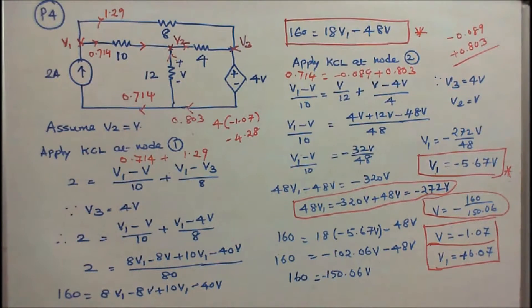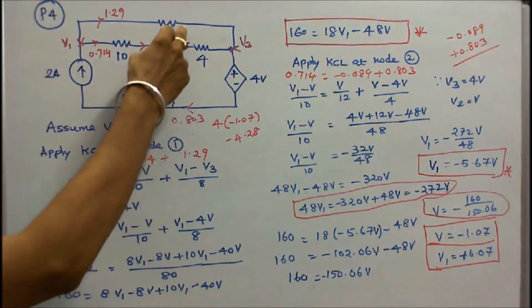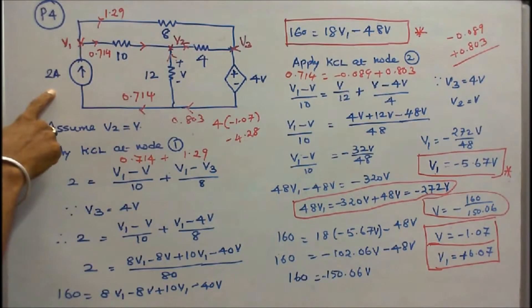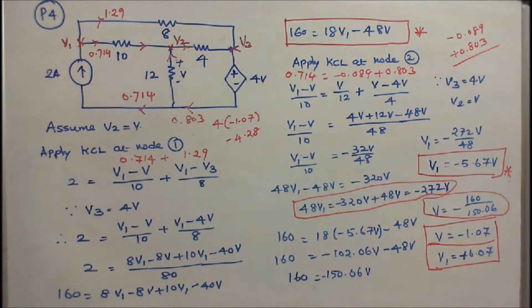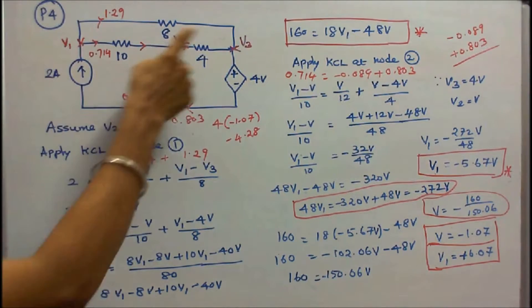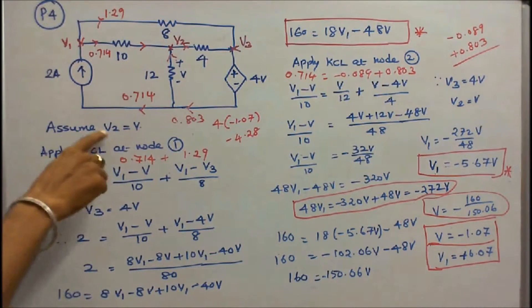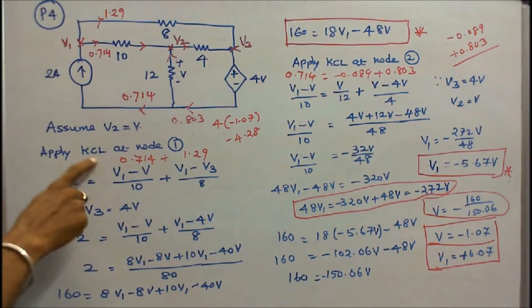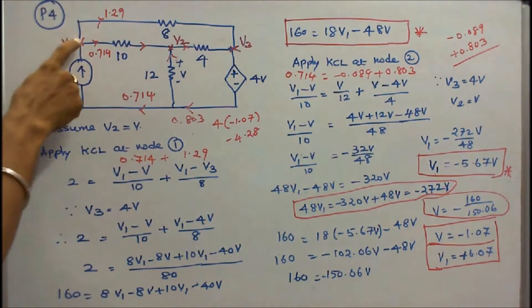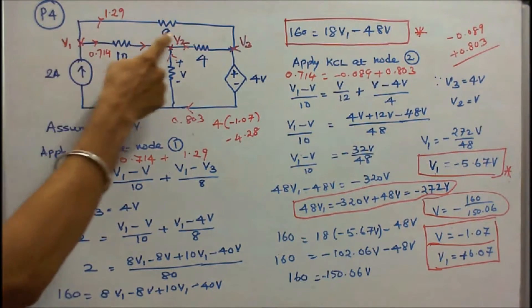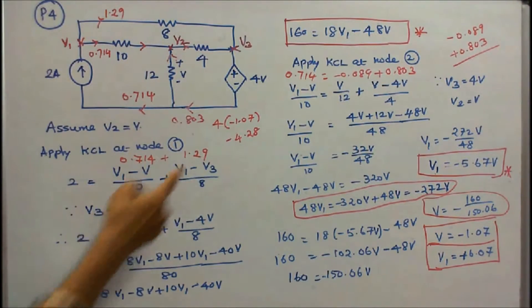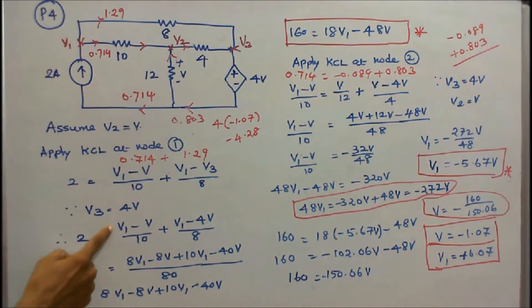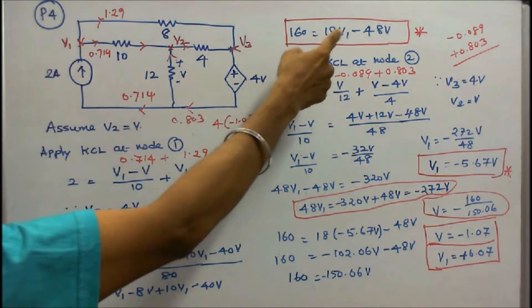Problem number 4: 4 resistors — 10 ohm, 12 ohm, 4 ohm, and 8 ohm — 1 independent current source, and 1 dependent voltage source are connected as shown in figure. The question is find the voltages at node 1, node 2, node 3 (V1, V2, V3). Assume V2 is equal to V. Apply Kirchhoff's current law at node 1: 2 is equal to (V1 minus V) by 10 plus (V1 minus V3) by 8. Since V3 equals 4V, simplifying: 160 is equal to 18V1 minus 48V.